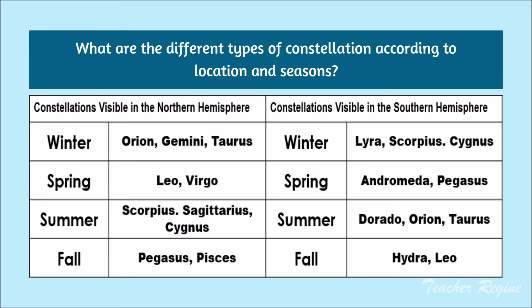For constellations visible in the Southern Hemisphere: during winter, we have Lyra, Scorpius, and Cygnus; during spring, we have Andromeda and Pegasus; during summer, we have Dorado, Orion, and Taurus; and during fall, we have Hydra and Leo.